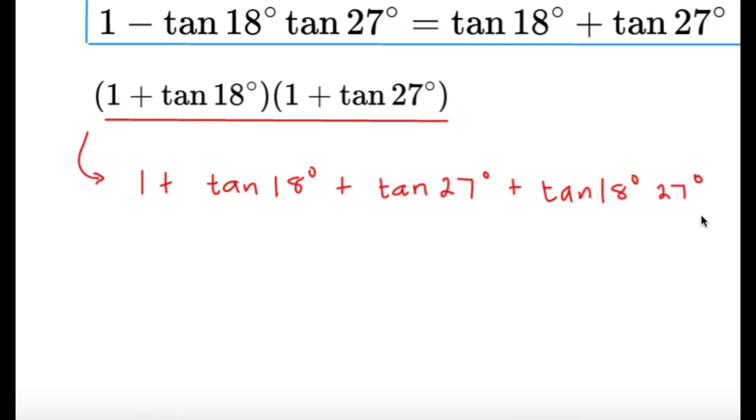We have a nice observation here. Based from the equation that we got from the tangent addition, tangent 18 degrees plus tangent 27 degrees, that's apparently the same as 1 minus tangent 18 degrees tangent 27 degrees. And this is a very nice thing because we have 1 plus over here, and then we have the plus tangent 18 degrees tangent 27 degrees.